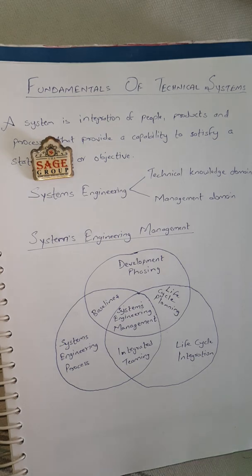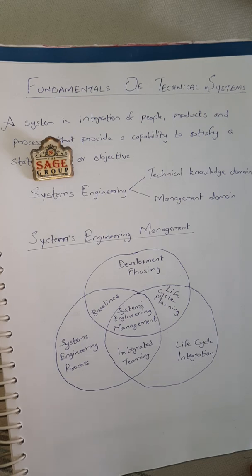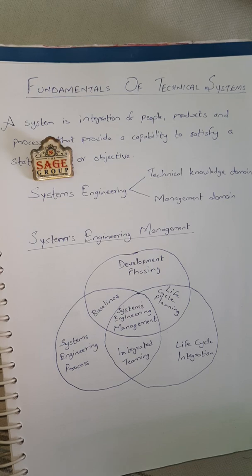The systems engineering process is the heart of systems engineering management. Its purpose is to provide a structural but flexible process that transforms requirements into specifications, architectures, and configuration baselines. The discipline of this process provides the control and traceability of developed solutions that meet customer needs. The systems engineering process may be repeated one or more times during any phase of the development.